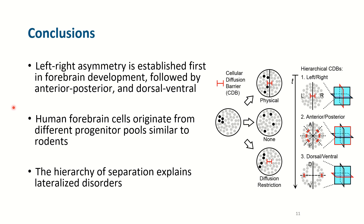What's important is that this hierarchy of having a left-right separation in neocortex first really helps us to explain lateralized disorders. Because left-right is separated first before anterior-posterior, it now makes sense that in some cases you have disorders that can affect the entire hemisphere without representation of the contralateral hemisphere, and this is just an effect of normal development. Thank you very much for taking the time to listen to our explanation of our recent manuscript. We thank all our co-authors and our funders.